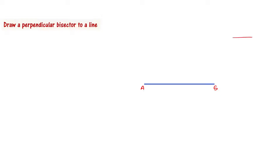At the same time, the perpendicular bisector divides AB into two equal parts. We are going to use this same concept to draw the tangent. Let us draw a line, and use the perpendicular bisector method.